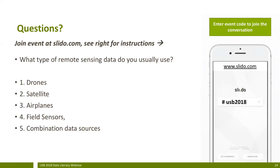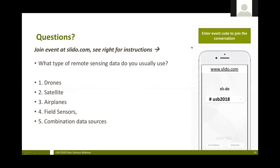I'd like to pose a question and get feedback from viewers: what type of remote sensing data do you usually use? It looks like most of you use a combination of data sources when referring to remote sensing data. With 11 responses, drones is the second-place response, but most of you are using a combination of those data sources.